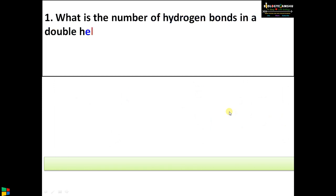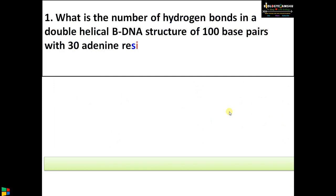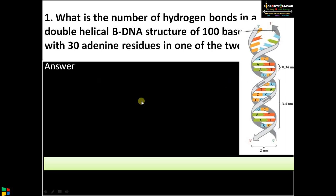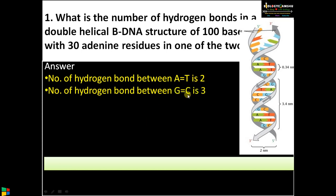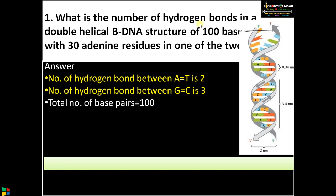First question: what is the number of hydrogen bonds in a double helical B-DNA structure of 100 base pairs with 30 adenine residues in one of the two strands? The number of hydrogen bonds between A and T is 2, whereas between G and C it is 3. The total number of base pairs given is 100. G and C make a base pair, A and T make a base pair.